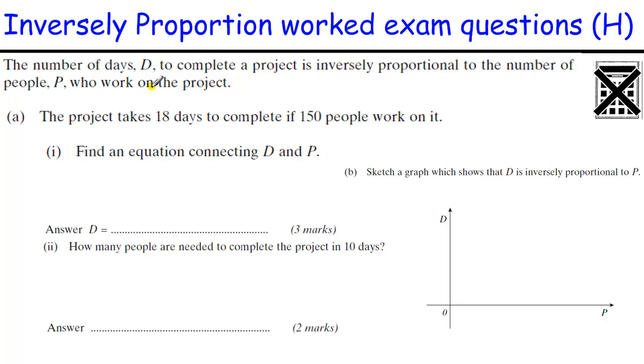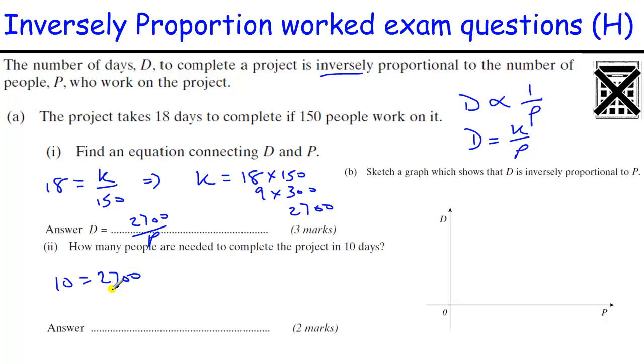The number of days D to complete a project is inversely proportional to the number of people P who work on the project. So days is inversely proportional to P, so that's 1 over P. So D equals K over P. We're told 18 days equals K divided by 150, so that implies K equals 18 times 150. There's no calculator needed here. 18 times 150 is 9 times 300, 9 times 3 is 27, so D is 2700 over P. How many people are needed to complete the project in 10 days? So we've got 10 equals 2700 over P. We can switch these two values, so P equals 2700 over 10, which is 270.